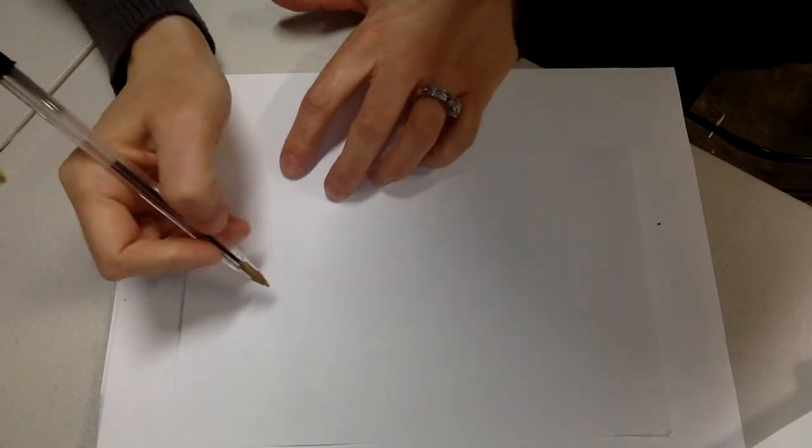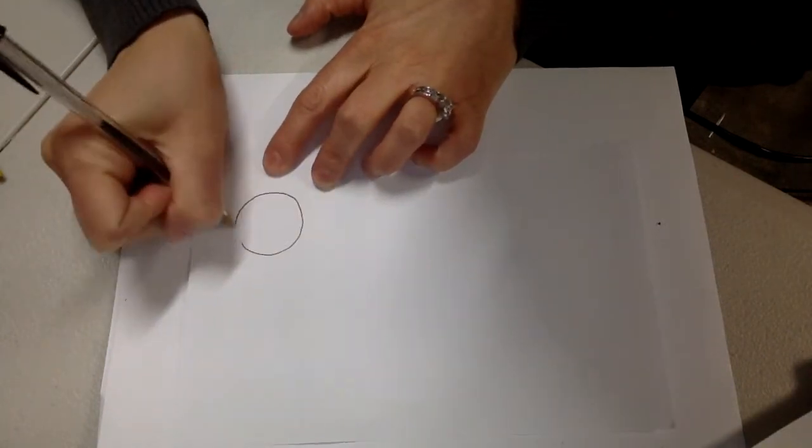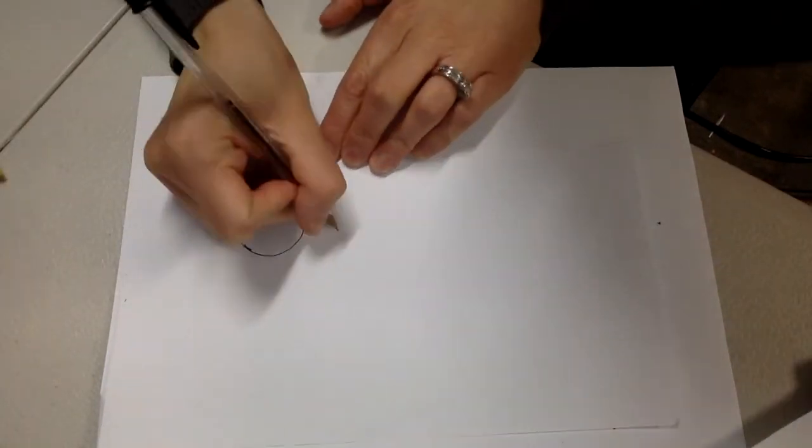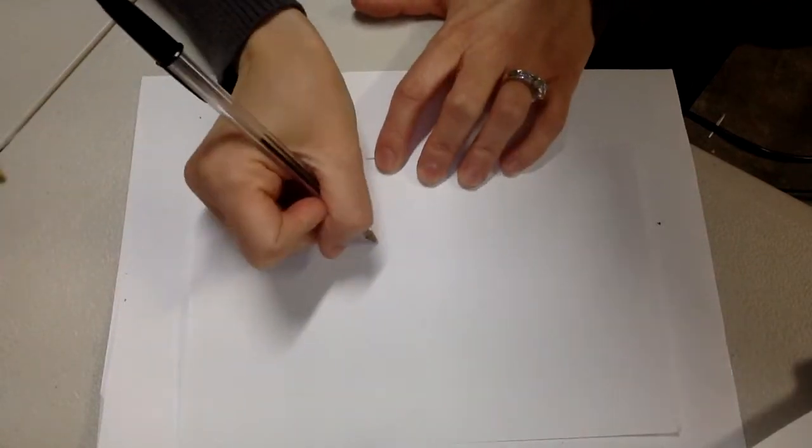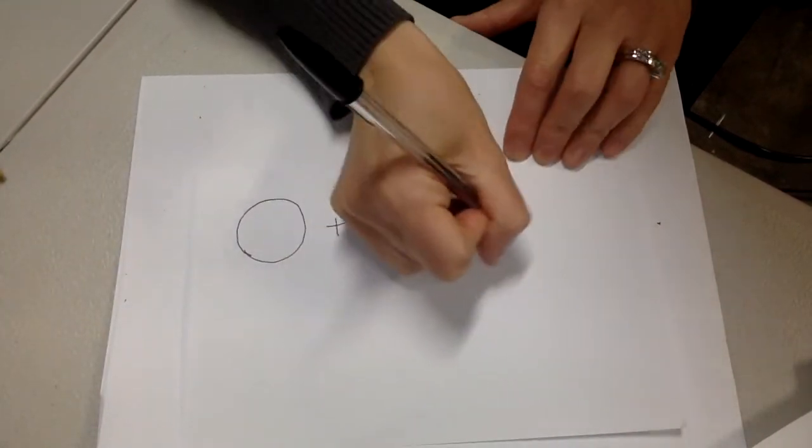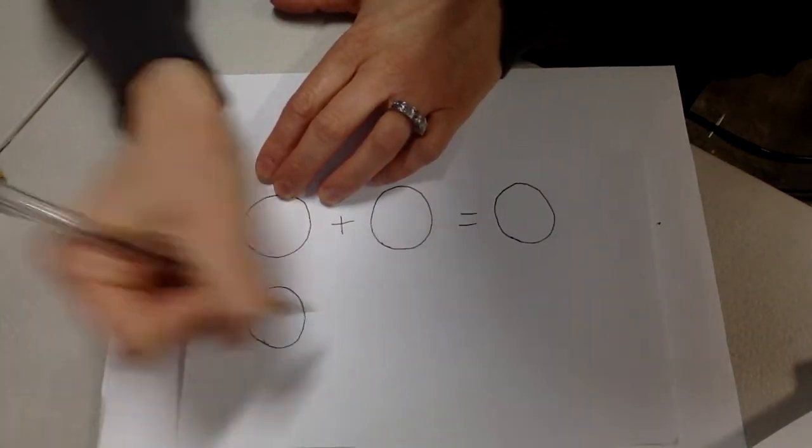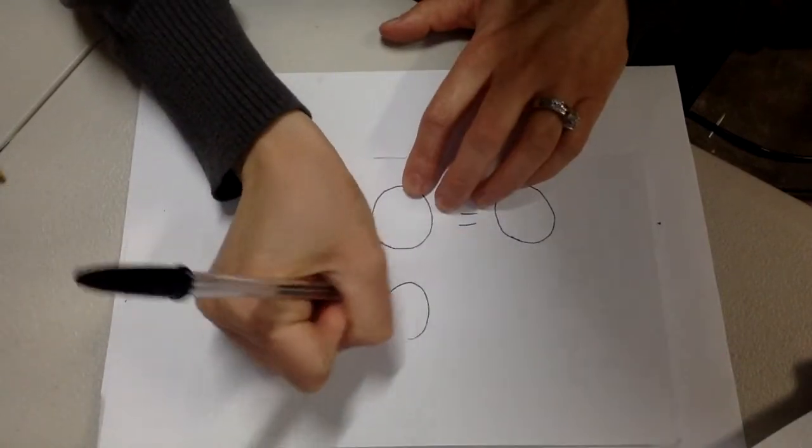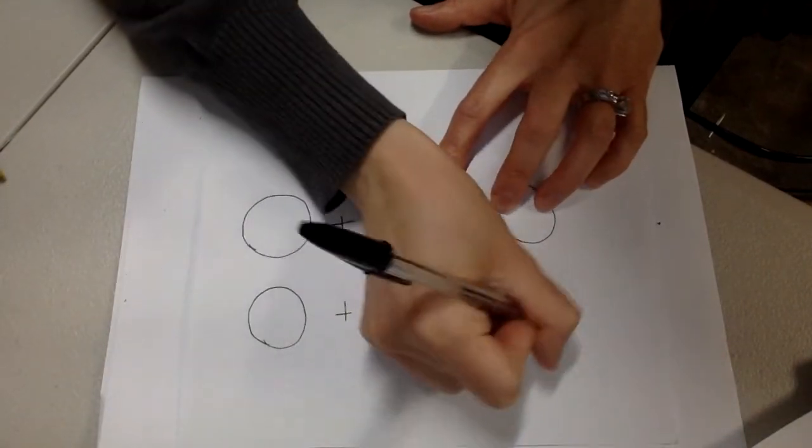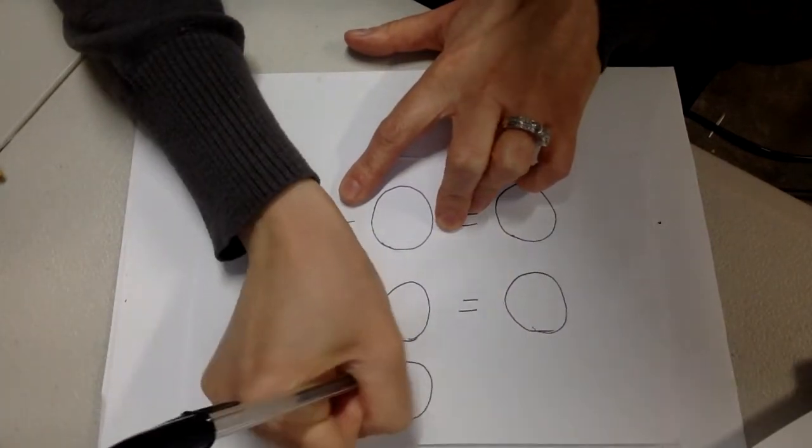So what we're going to do today is a review of what we're learning about. You're going to need a pencil for this, and this doesn't have to be perfect. I'm using a pen so you can see. What I want you to do is draw circle plus circle equals circle, and I want you to do that three times. Doesn't have to be perfect. This is just a review learning diagram.